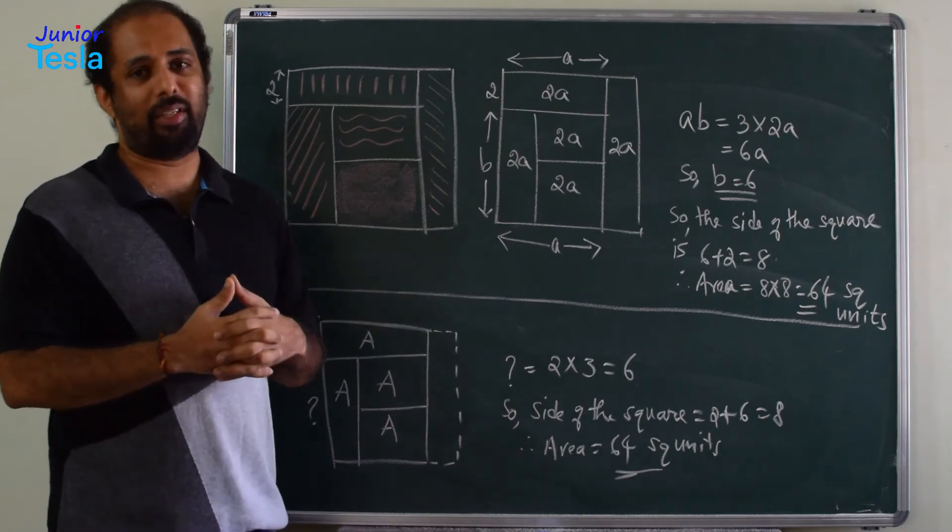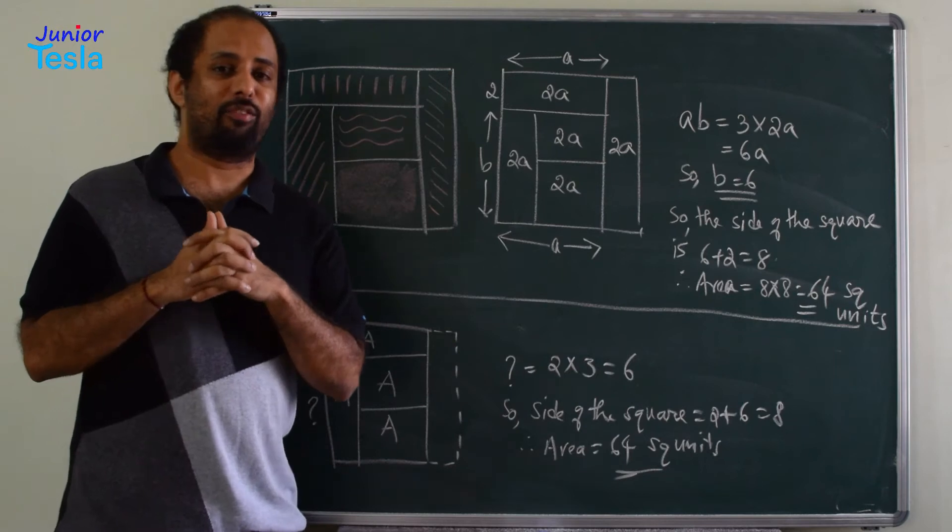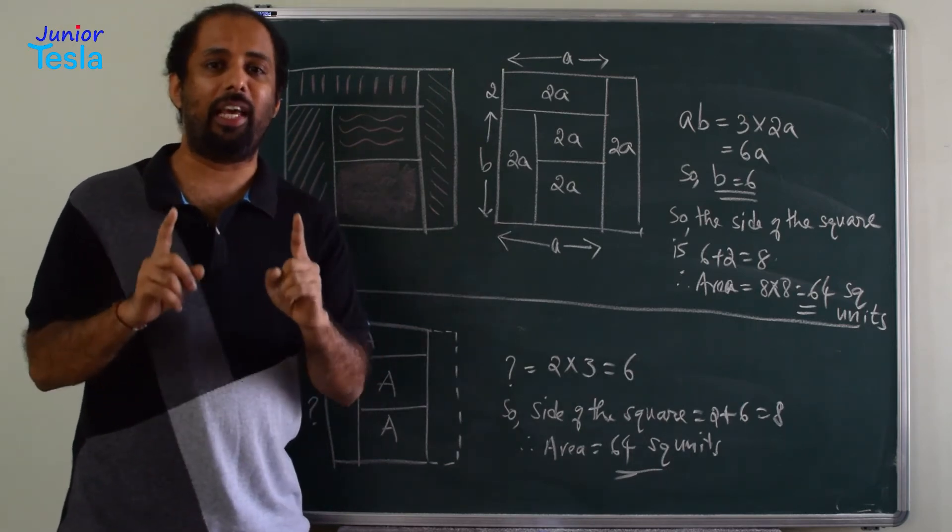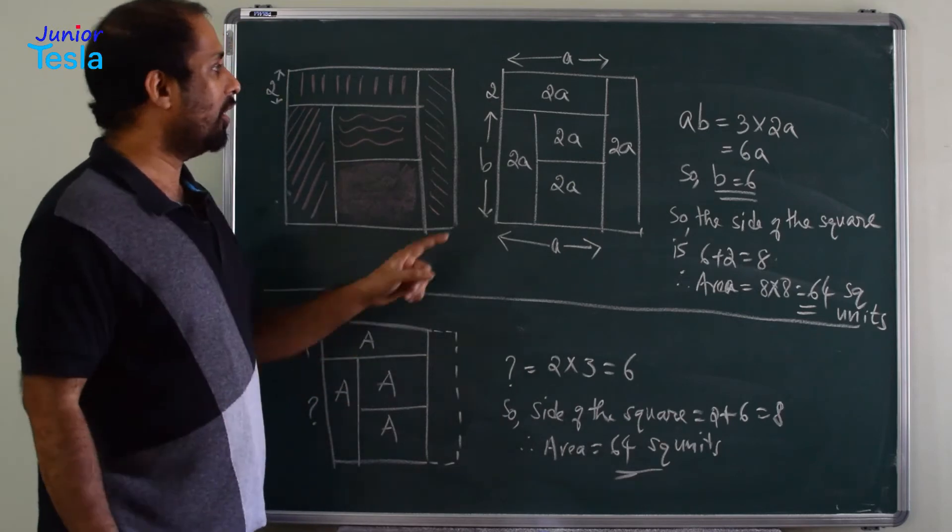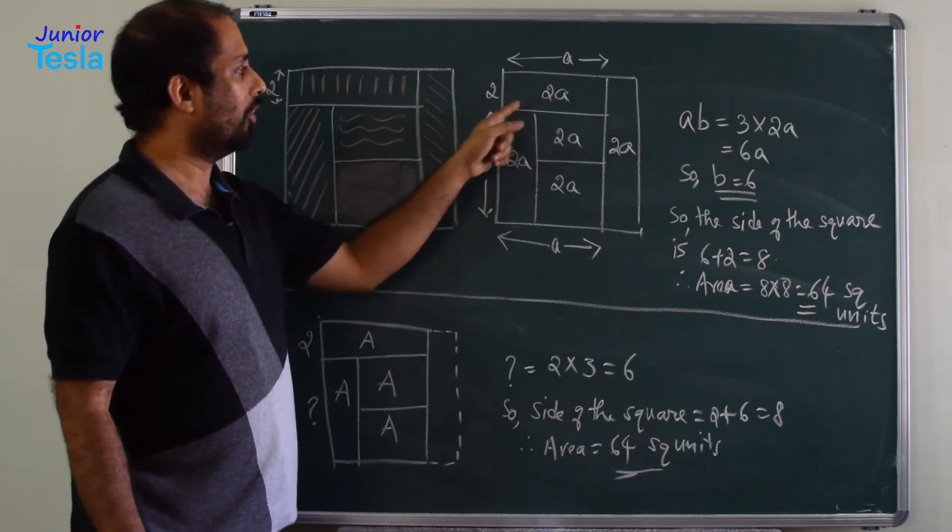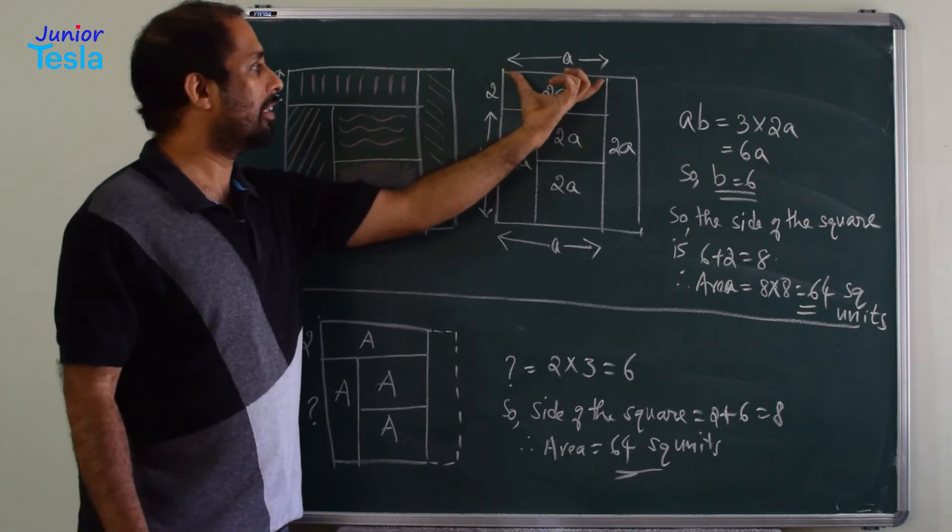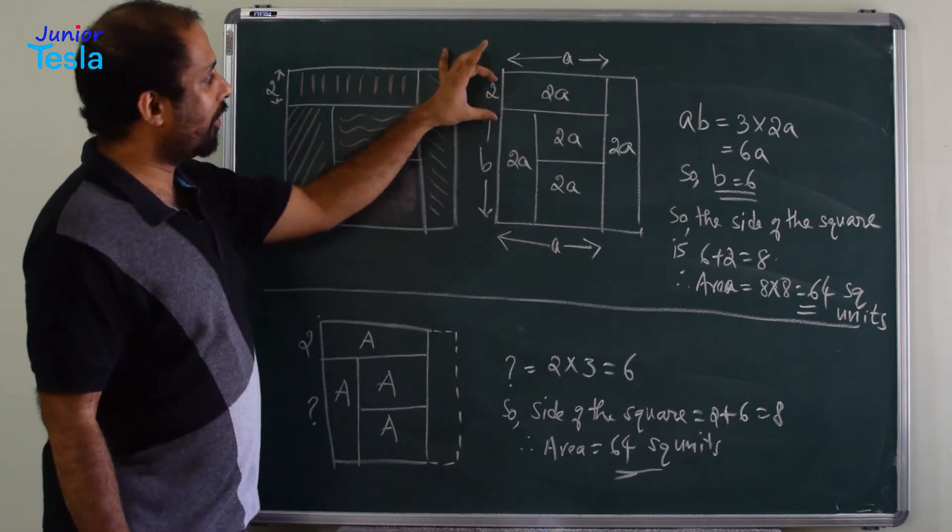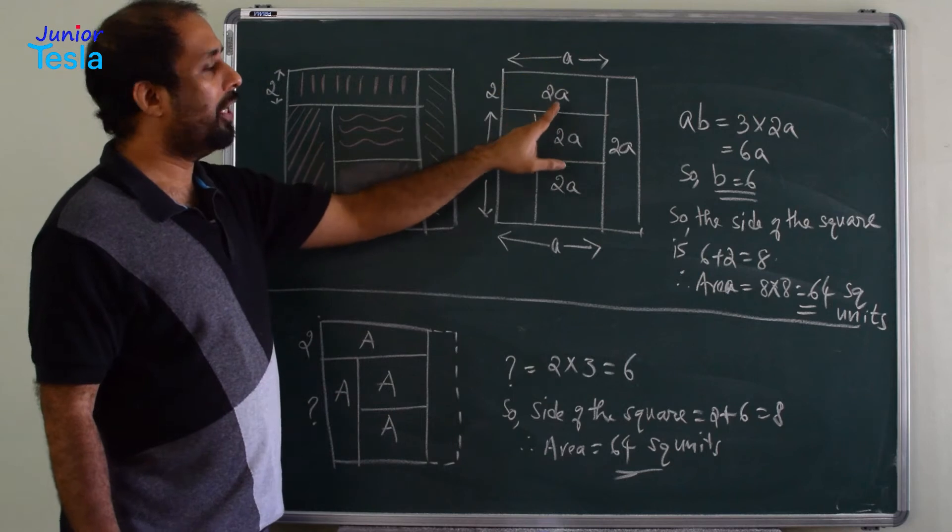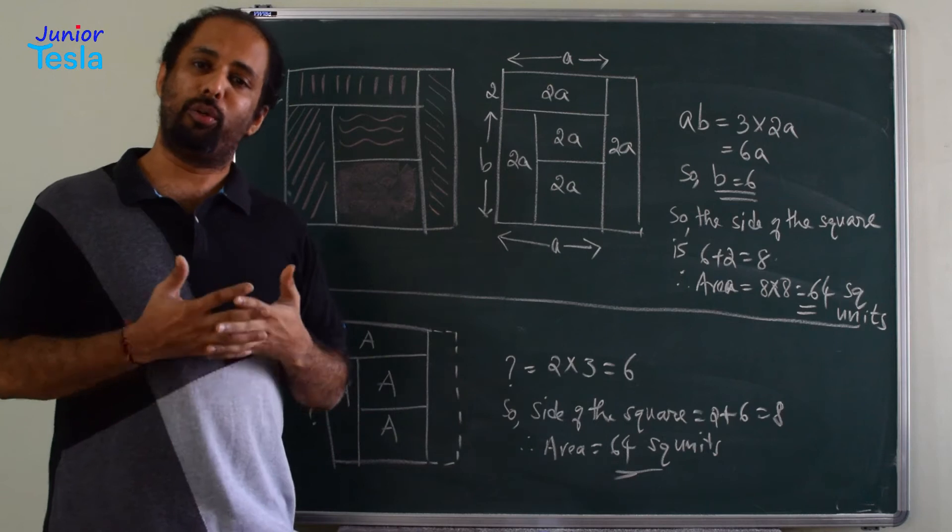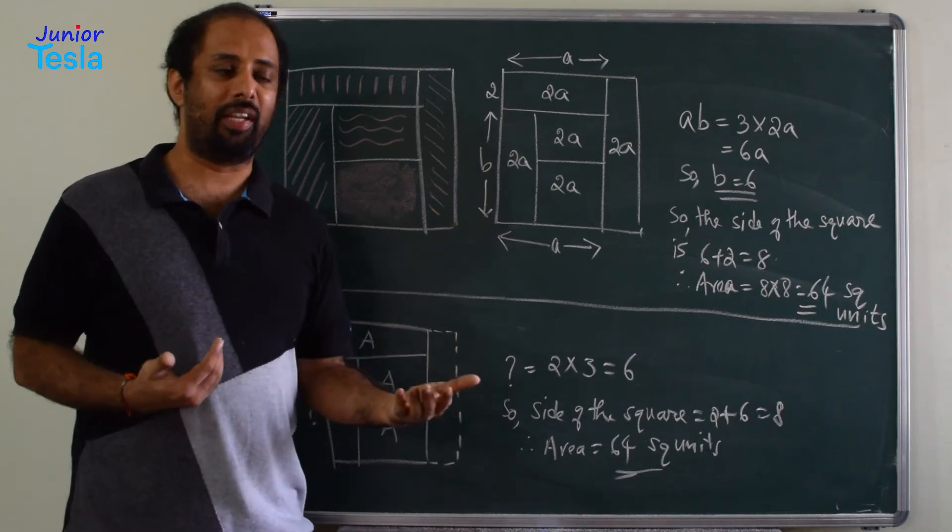I am going to take the statement. The statement says the square is divided into 5 equal areas. So 5 equal areas is very important here. So if I have taken this region, this particular region, the area is 2A. Because I have taken this length as A, this is already given 2. So 2 into A will be 2A. Now if this is 2A, then all the remaining regions also will be 2A only, because they are all equal in area.